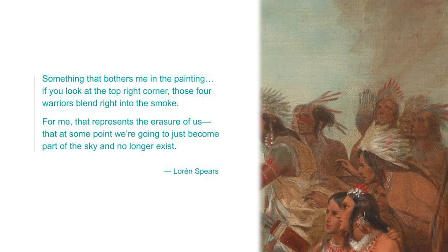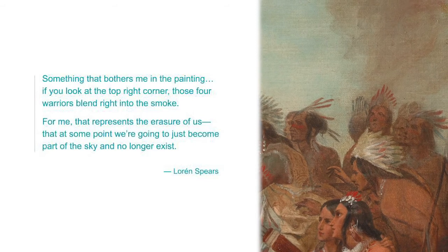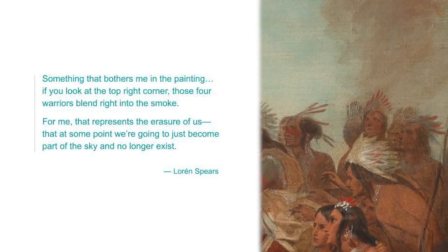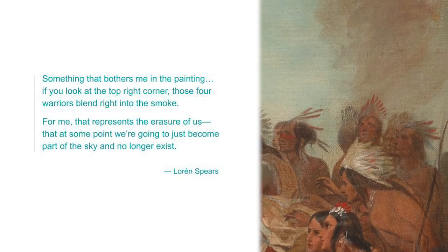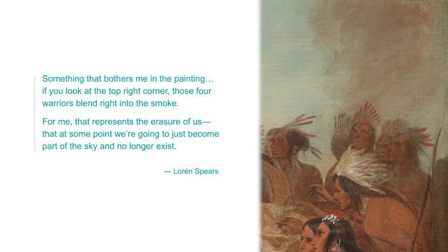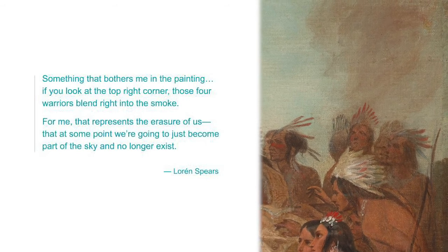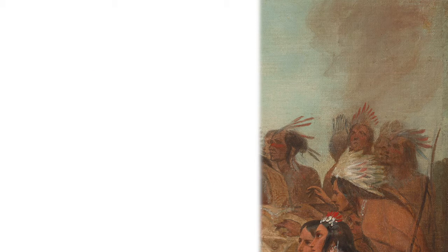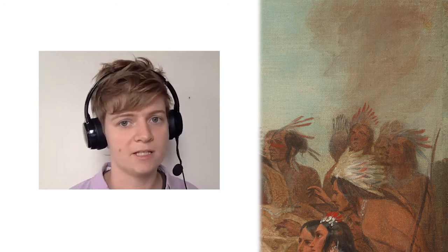Something that bothers me in the painting — if you look at the top right corner, those four warriors blend right into the smoke. For me, that represents the erasure of us, that at some point we're going to just become part of the sky and no longer exist. Loren Spears goes on to describe how disheartening the myth of the vanishing native is, and how common it is to see illustrations that make it seem like Native Americans either don't exist anymore or are going to disappear soon. Instead of acknowledging the many ways that white Americans are directly responsible for the genocide of native people, the myth of the vanishing native makes it seem like it's just fate and it's nobody's fault.